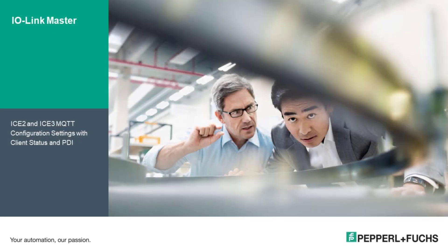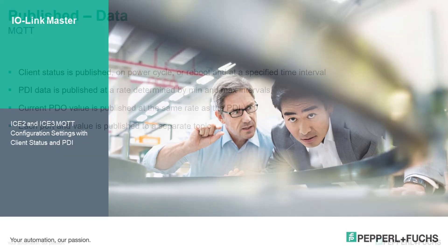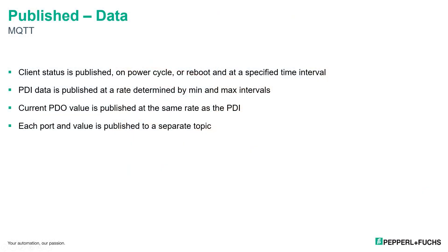Today we will be going over the ICE 2 and ICE 3 MQTT configuration settings with client status in PDI. For published data, client status is published on PowerCycle or Reboot and at a specific time interval. The PDI data is published at a rate determined by min and max intervals. The current PDO value is published at the same rate as the PDI, and each port and value is published to a separate topic.